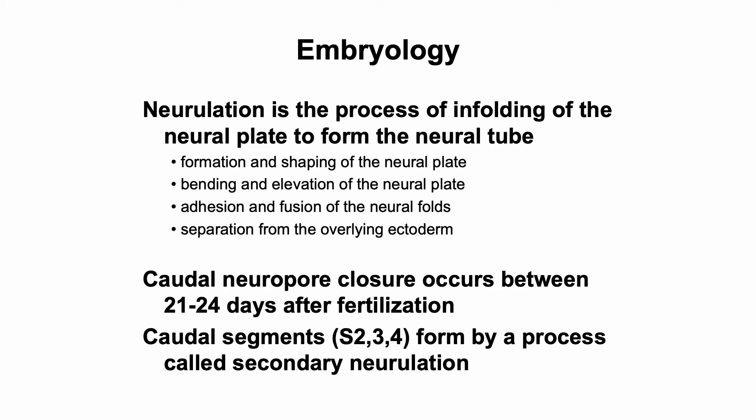The embryology of these conditions is fascinating as it really harks back to neurulation, which is a very early step in development. Neurulation is the process of infolding of the neural plate to form the neural tube, and it involves discrete steps such as the formation and shaping of the plate, bending and elevation of the plate, adhesion and fusion of the folds, and finally separation from the overlying ectoderm. This process occurs generally between the third and fourth week after fertilization. The caudal segments of the spinal cord — S2, S3, S4 — form by a separate process of secondary neurulation that is less well defined.